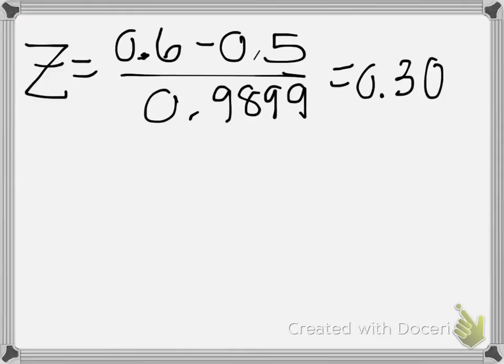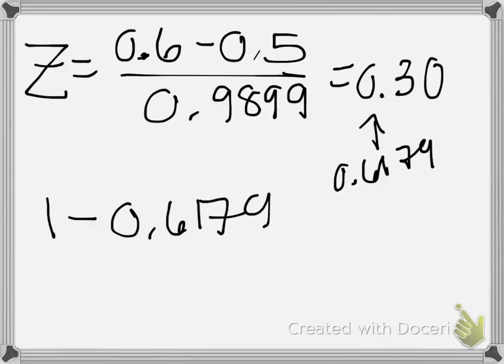Okay. I now go to my table. When I look at my table, like I'm doing right now, 0.30 is 0.6179. This is not our final answer, though, because it's greater than. So we do 1 minus 0.6179. When I type that in my calculator, I get 0.3821. This is my p-value.